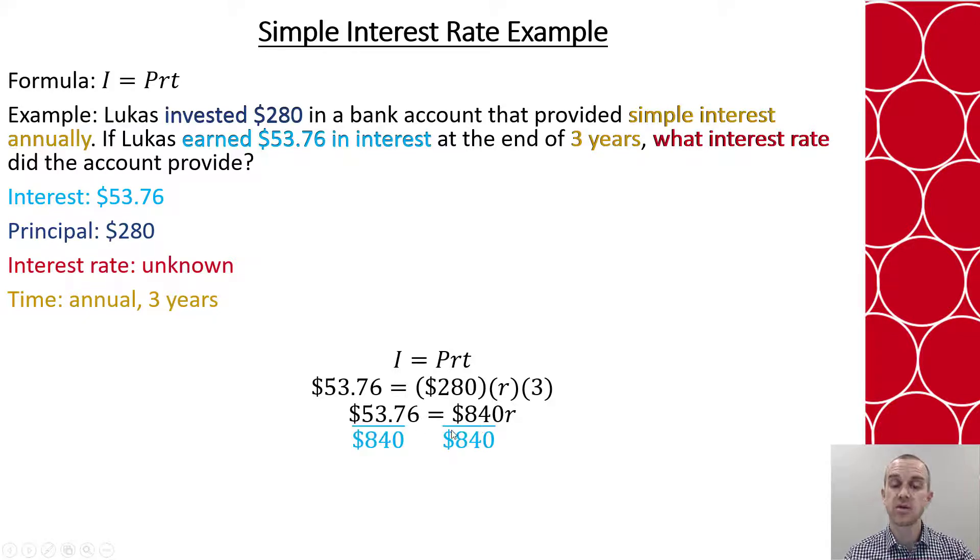So next, I divide both sides by the $840. 840 divided by 840 simplifies to 1, and then when I do that I get .064. That's the rate as a decimal.